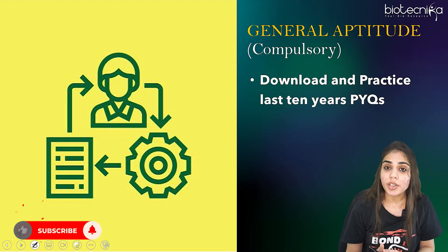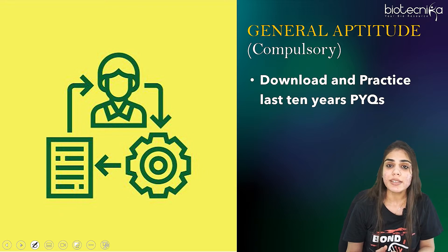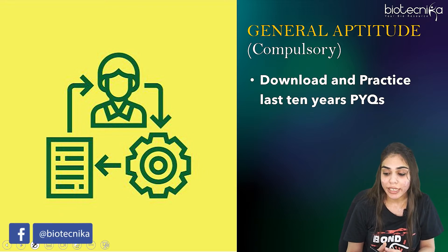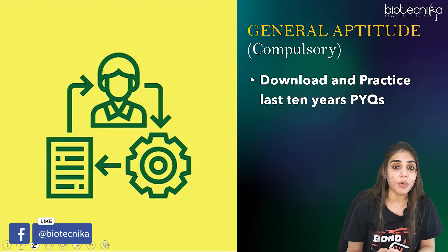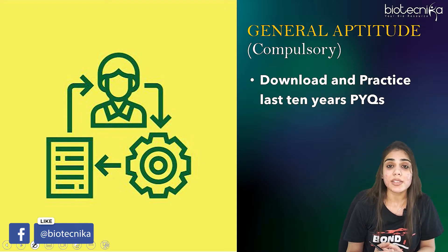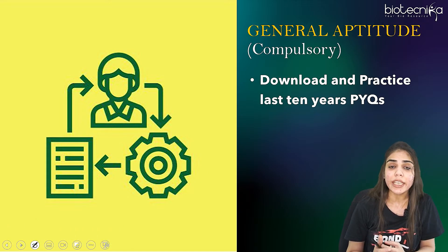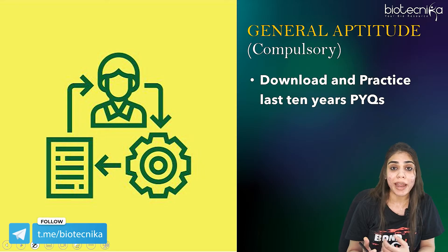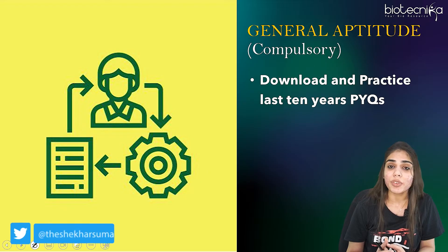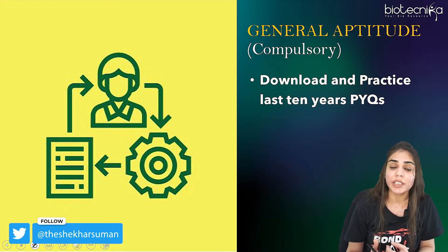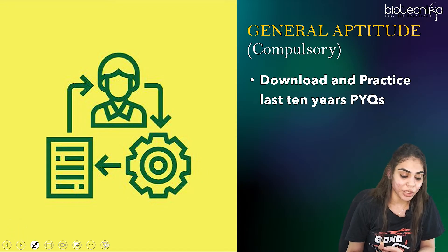Coming to the general aptitude section, which is compulsory in GATE Life Sciences exam. For this there are no reference books needed. You have to download and practice last 10 years PYQs. Once you are done with your PYQs practice, that will be more than enough — it will give you an idea about the pattern and how questions are asked. You have to practice all numericals for general aptitude.